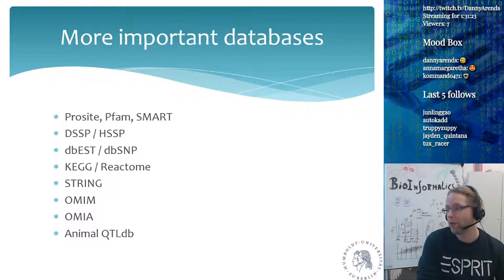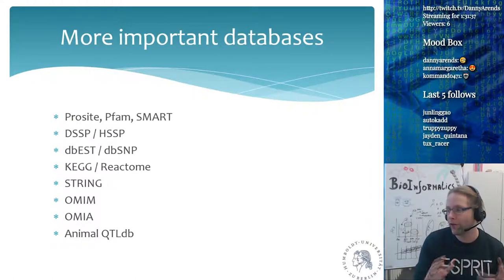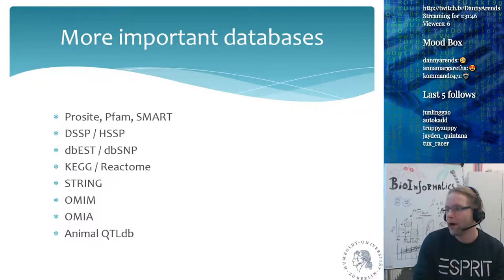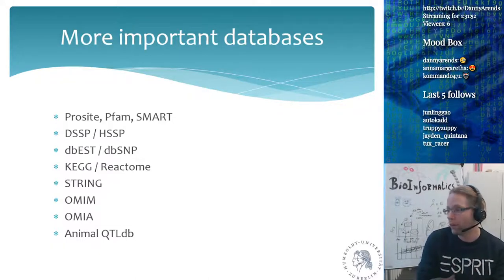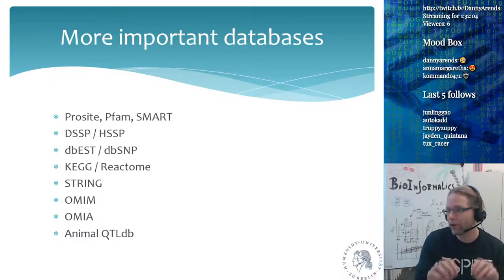OMIA is the equivalent database for Mendelian diseases in animals — same database structure but focused on animals, covering Mendelian diseases found in animals that are also found or not found in humans. The Animal QTL Database is there for animals and plants, mostly focused on animals but with some model plants. It stores all known associations previously found — if you find a certain genomic region controlling a phenotype like milk yield in a cow, you can use the Animal QTL Database to see if the same region has been implicated in other breeds.